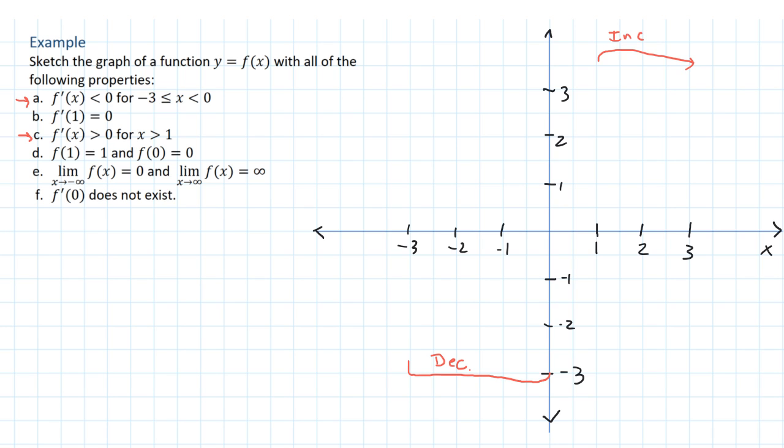Let's look at this one next. We're told about what the values of the function are. So f(1) = 1. So this point is going to be on my graph. f(0) = 0. So this point is going to be on my graph.